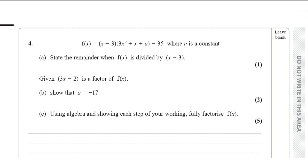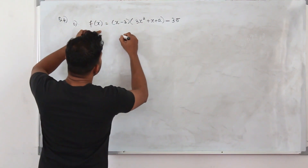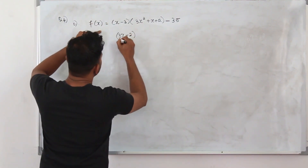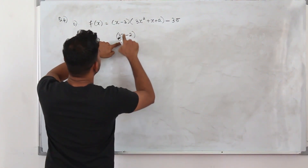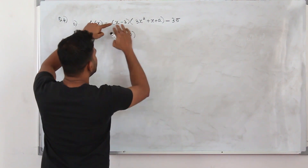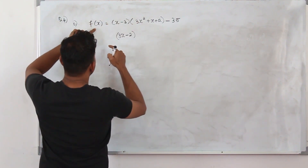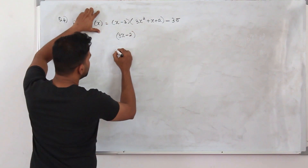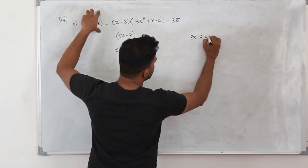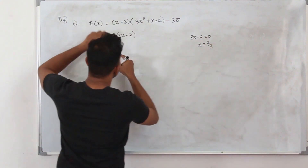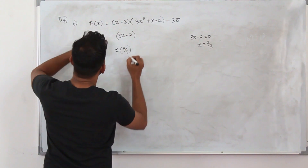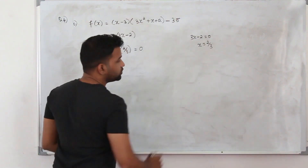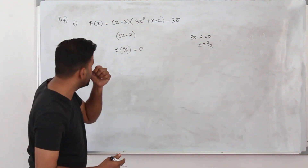Part b: given that (3x minus 2) is a factor of f(x), show that a equals minus 17. This question has two marks. When (3x minus 2) is a factor of f(x), it means when you divide the function by (3x minus 2) the remainder is 0. So using the factor theorem, set 3x minus 2 equal to 0, giving x equals 2/3. Substituting 2/3 into the function gives 0.